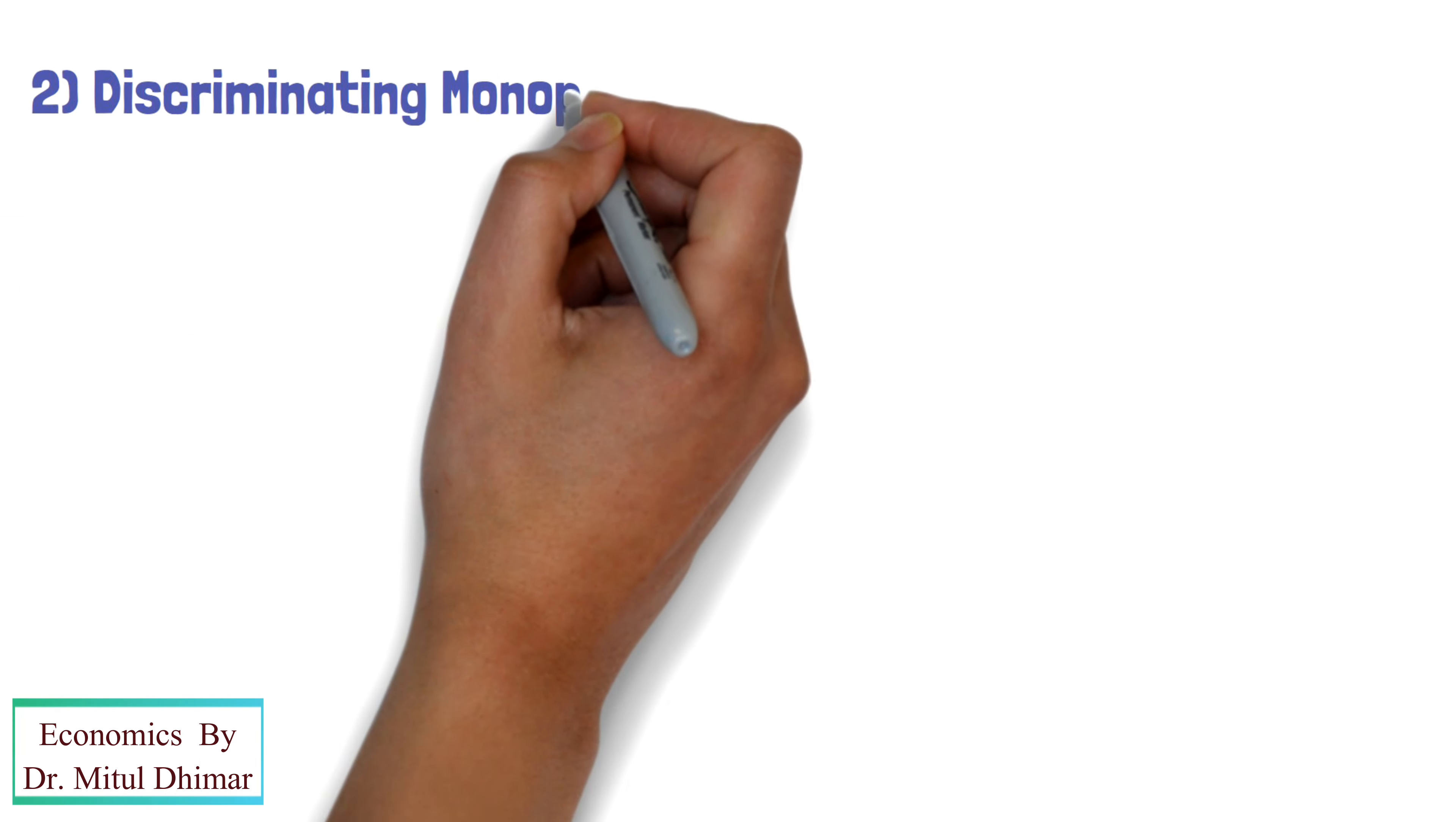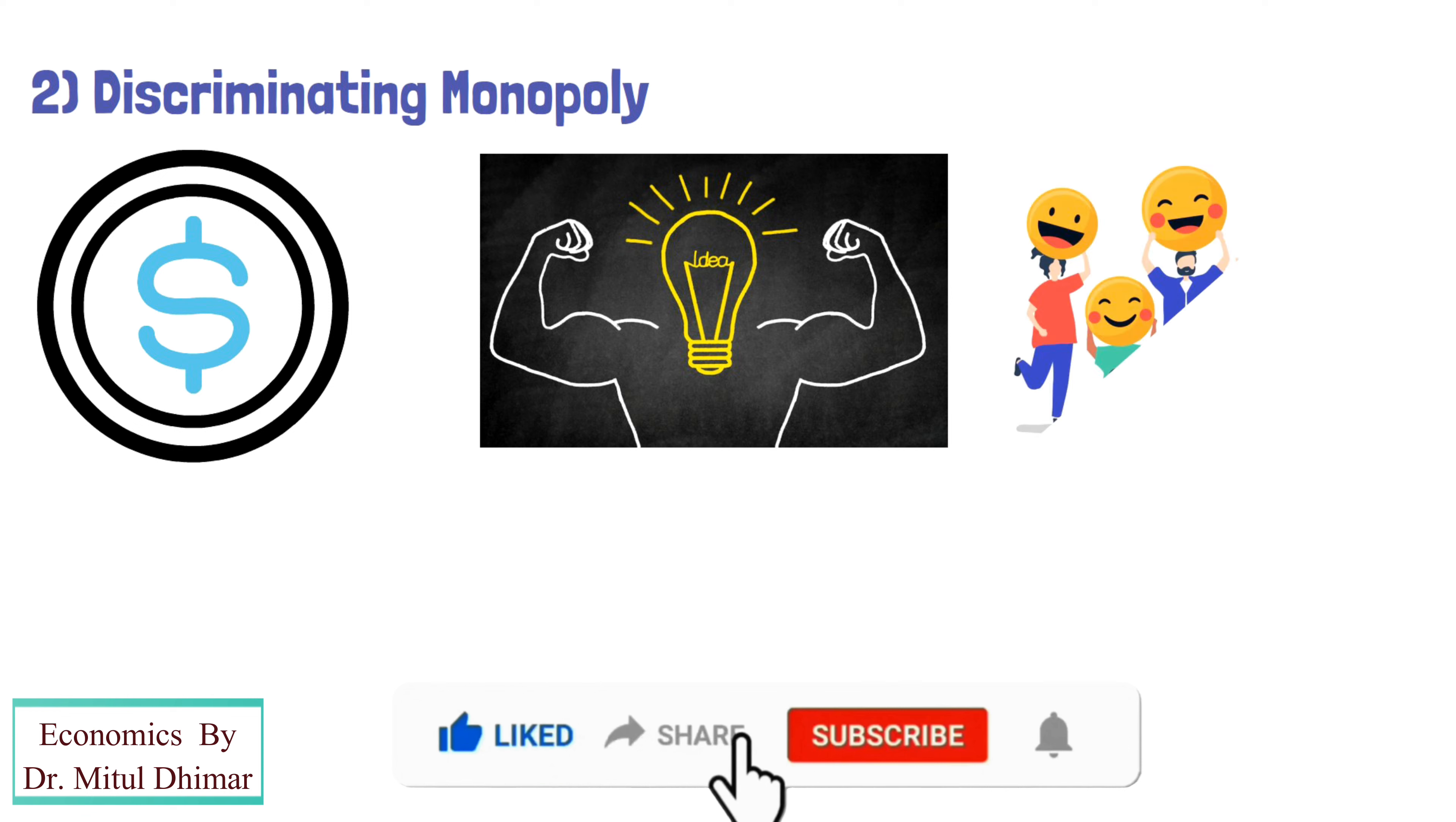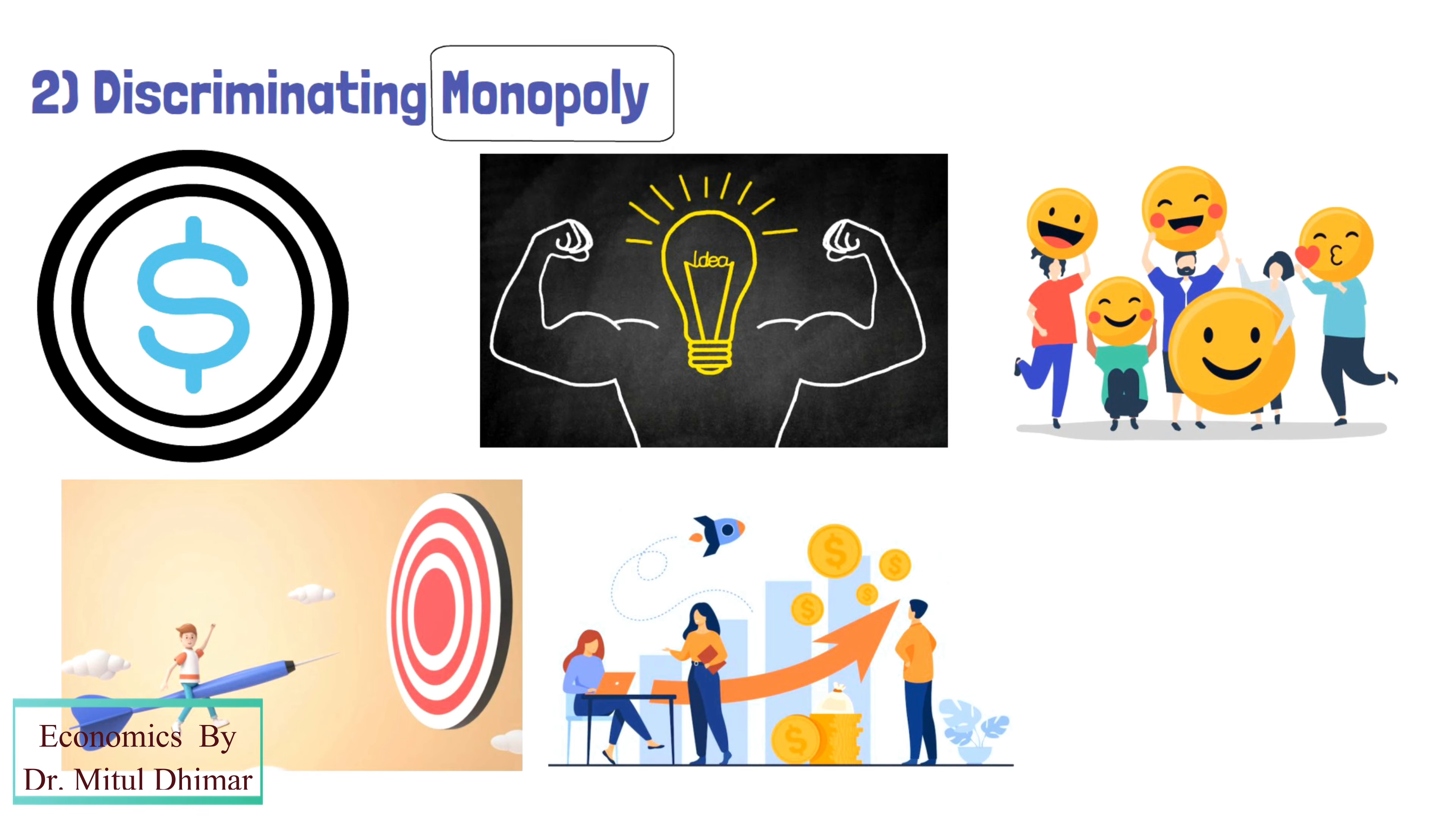2. Discriminating monopoly. Price differentiation is a special power that a monopoly enjoys. It bases its objective on profit maximization. Monopoly can either choose price differentiation or quantity differentiation.